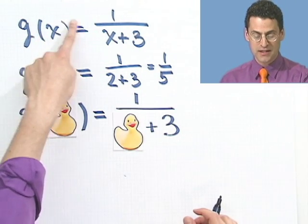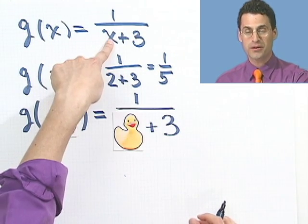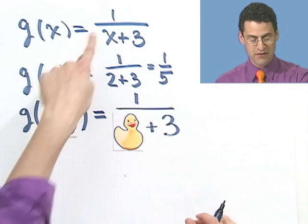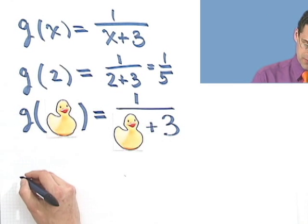This is just a symbol, which means to find out where this function sends x, you just do this. So if I put in a 2, you put in a 2 for all the occurrences of x. If you see a rubber ducky, you put a rubber ducky in wherever you see an x. That's all there is to it. Let's try one last one.